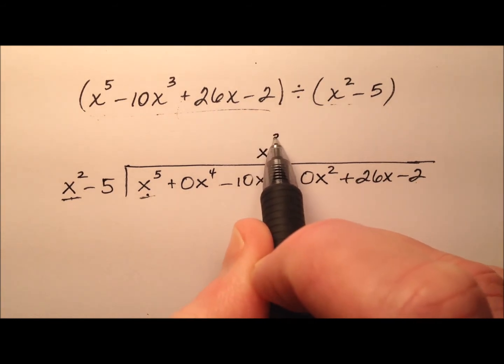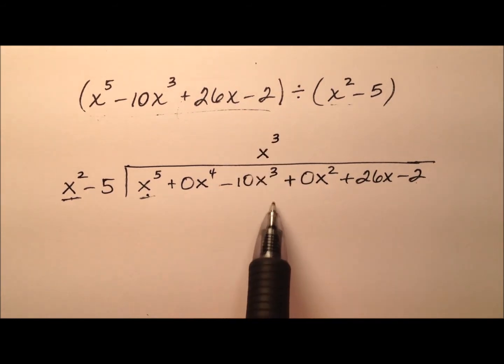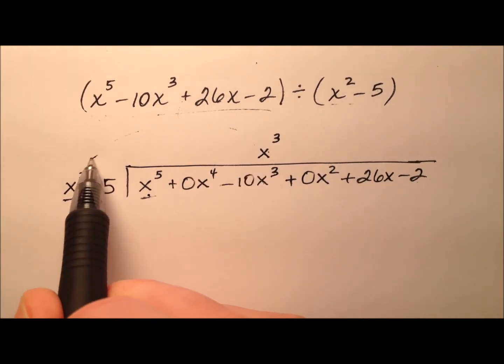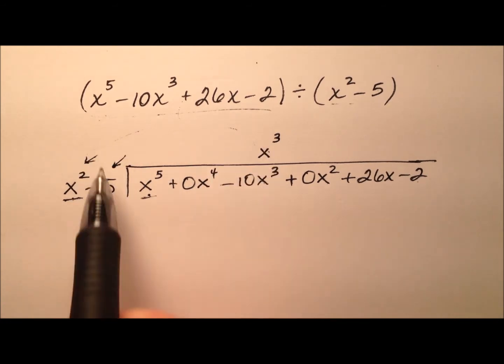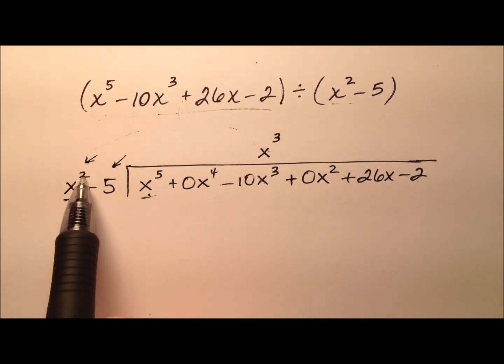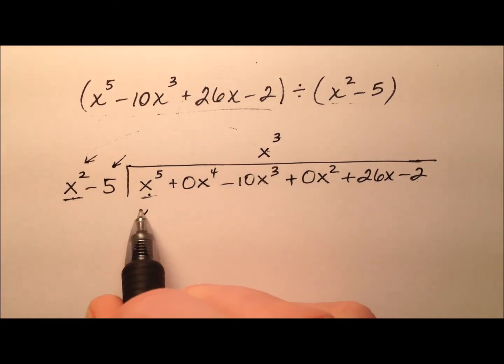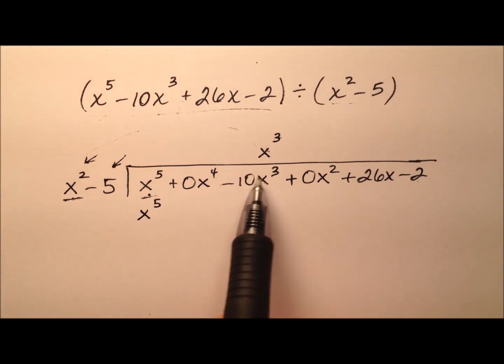So let's go ahead and put that one, x cubed right here, and we'll line up vertically our cubic terms so x cubed and x cubed. And then we're going to come back through and multiply here and here, so we distribute that.